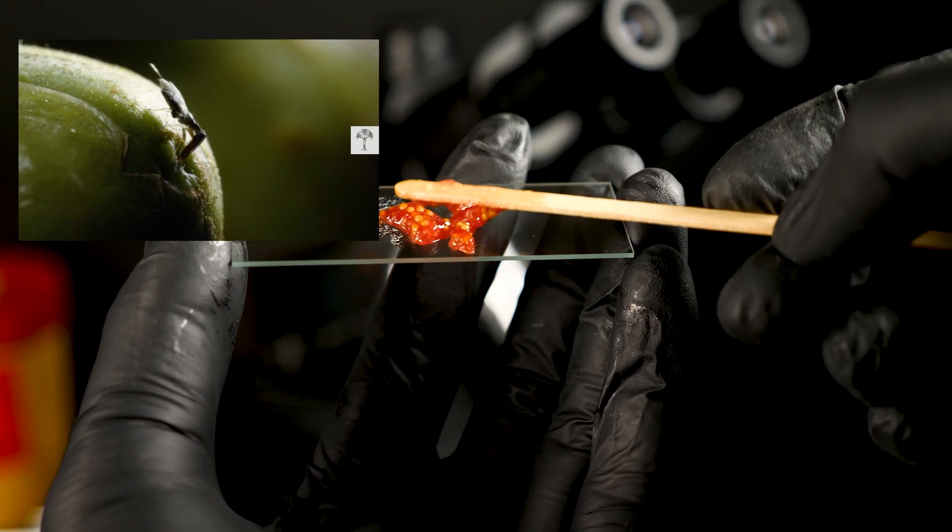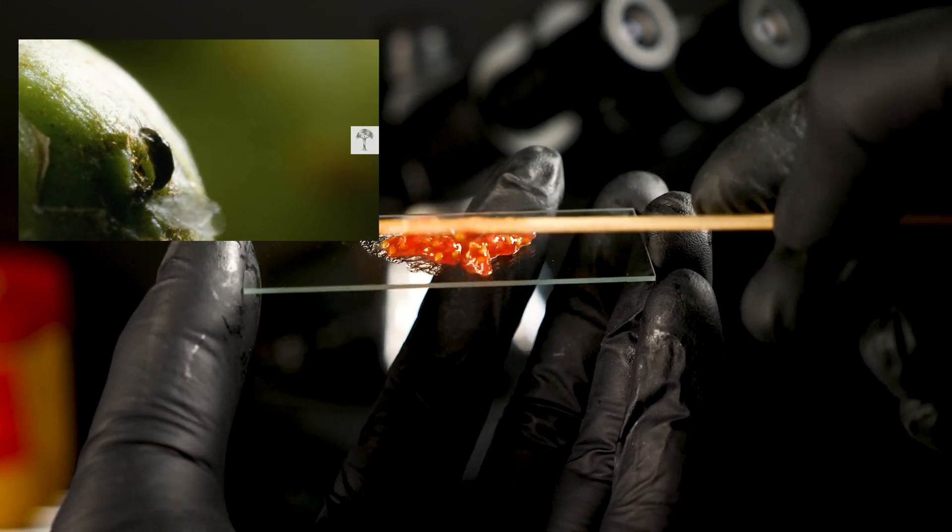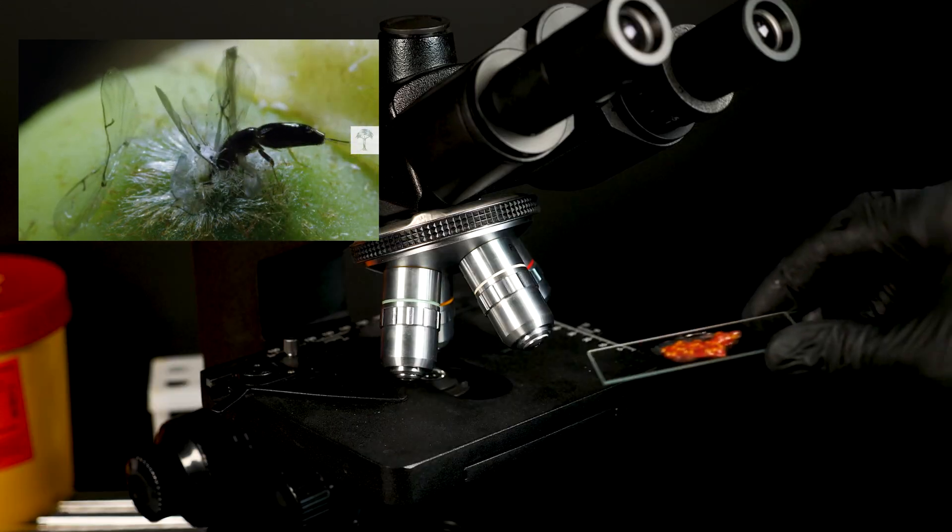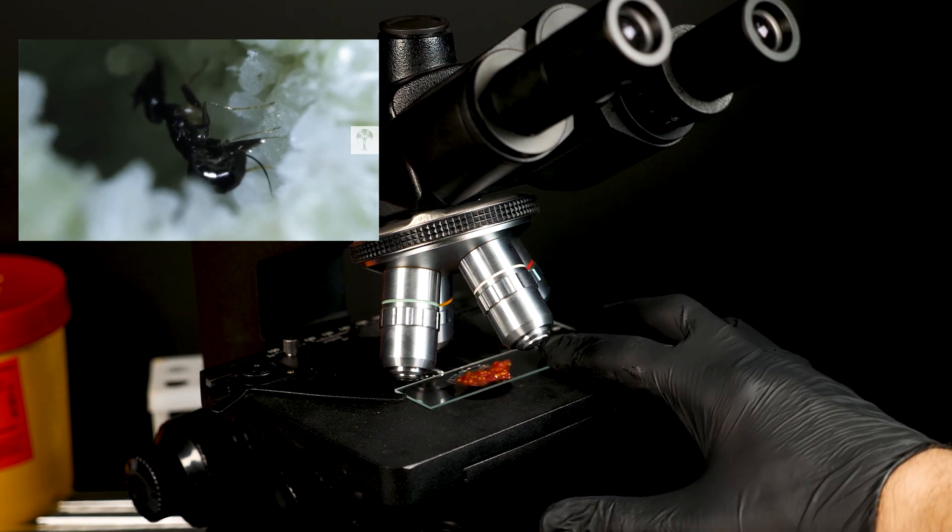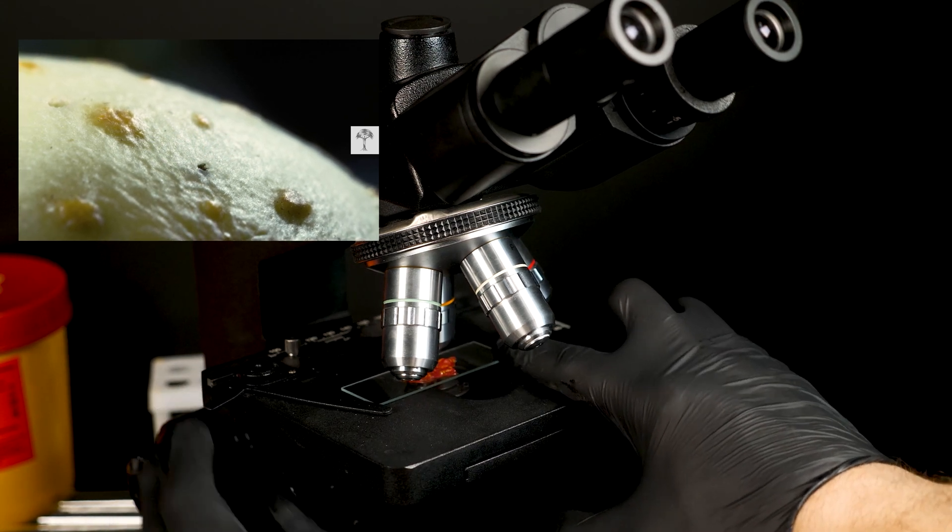But a fig that you pick from a wild tree might surprise you with some worms. These worms appear due to a unique relationship between figs and pollinating wasps, such as Blastophaga psenes. These tiny insects play a crucial role in the fig's reproduction process.